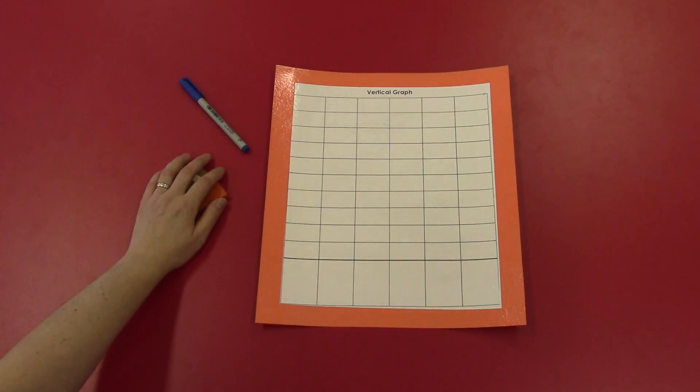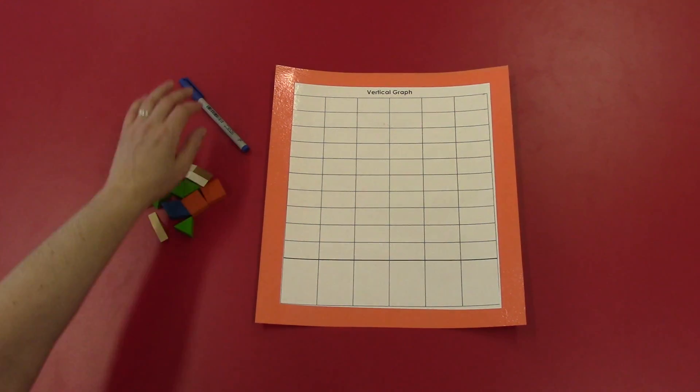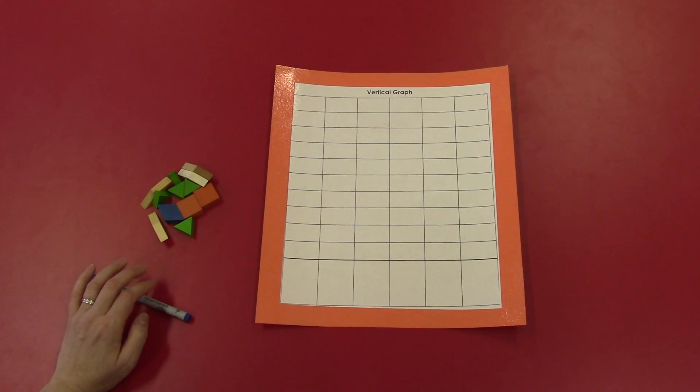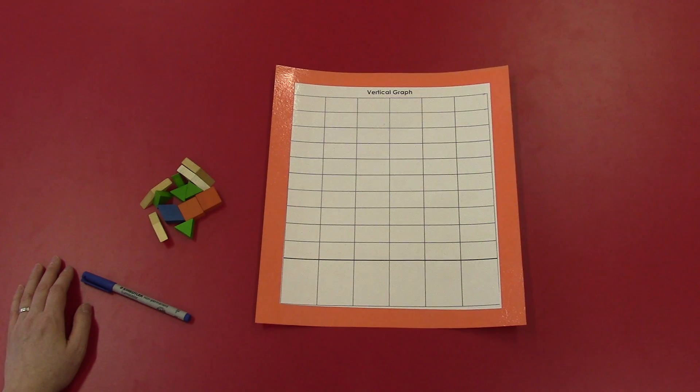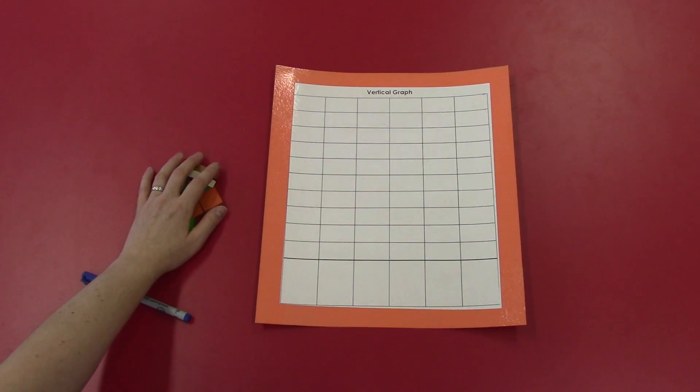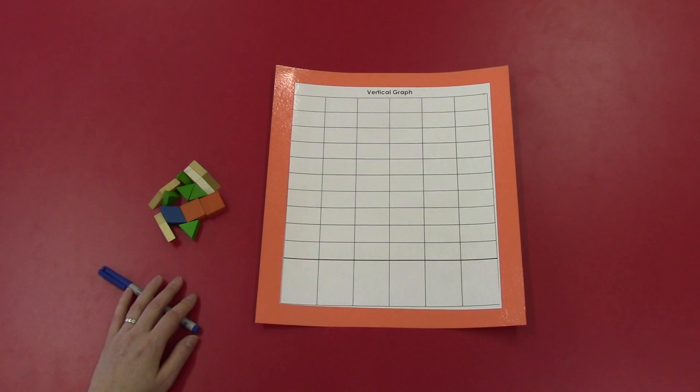So I'm going to graph these, so I have my objects and I need a pen of some kind to do my writing, because graphs do need labels and titles. So even though most of this is going to be using real objects, I do want to make sure that I'm creating a title and labeling my graph. So once I have my graph paper, my concrete objects, and my pen, I'm ready to start.